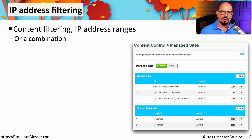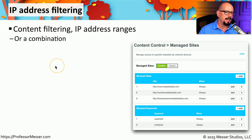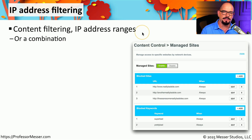There's a website routerpasswords.com that lists out all of these device models, their default username, and their default password. Many of these all-in-one SOHO devices often have a number of security features — for example, you might be able to do content filtering or IP address filtering on the device.